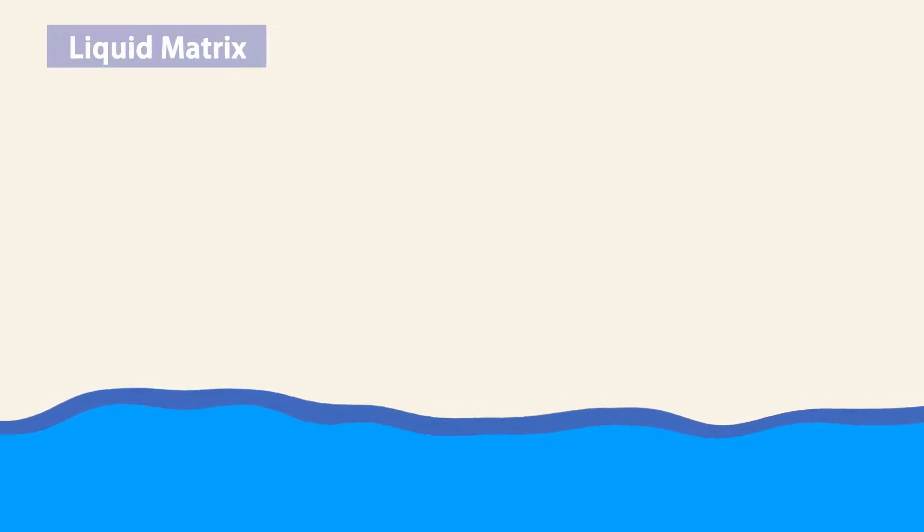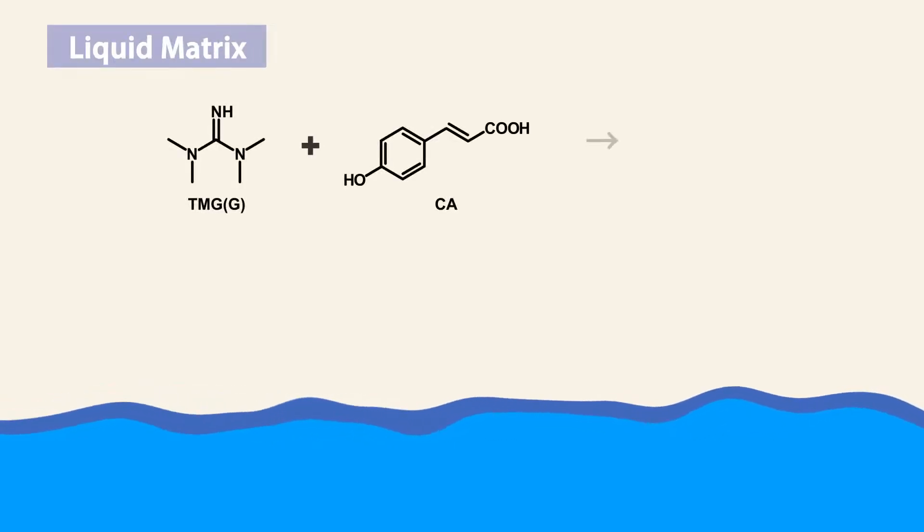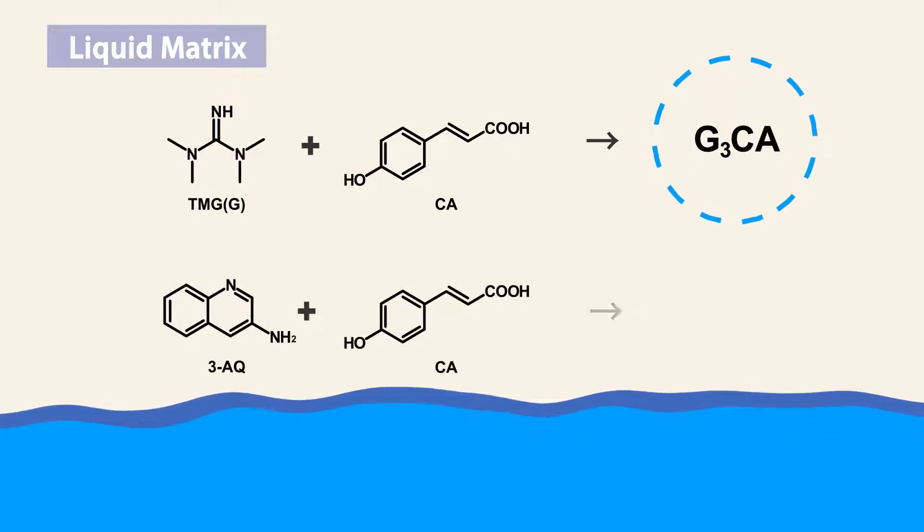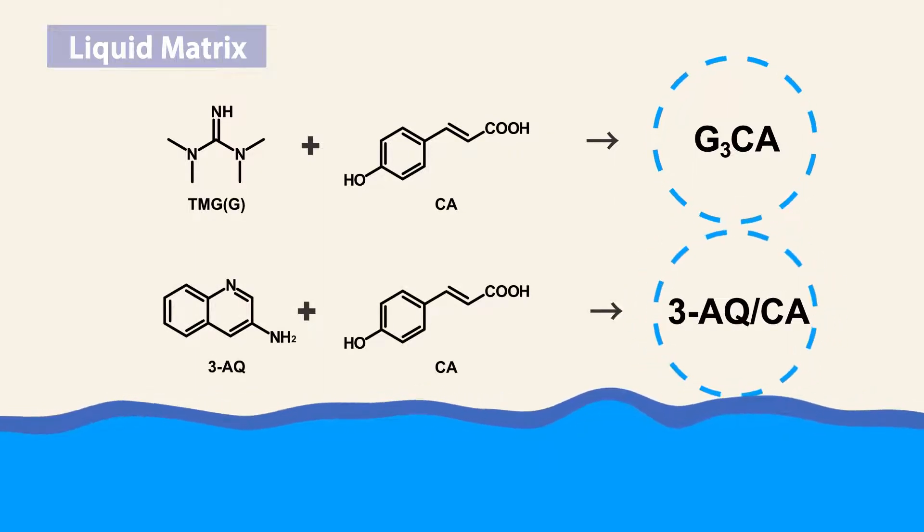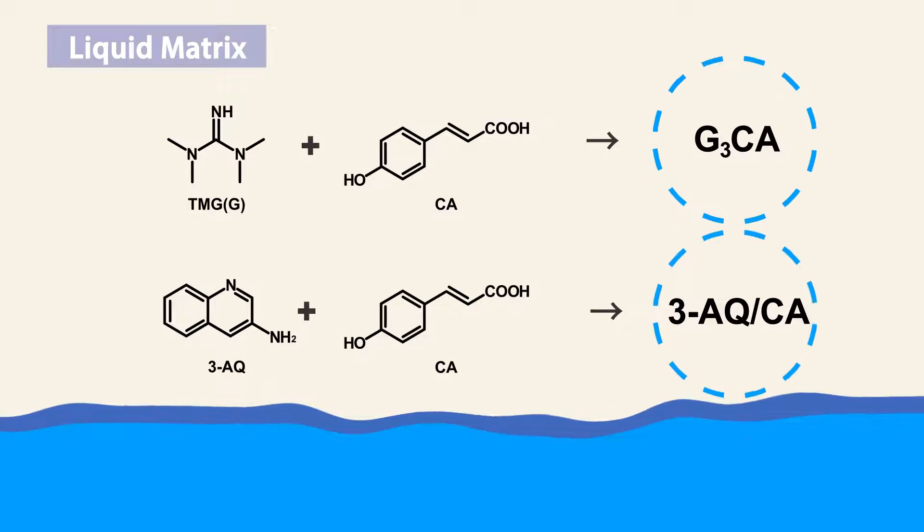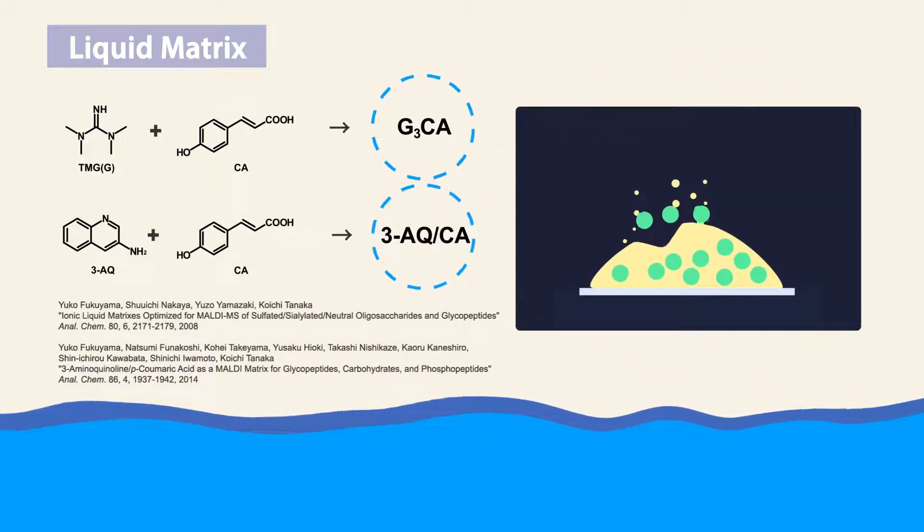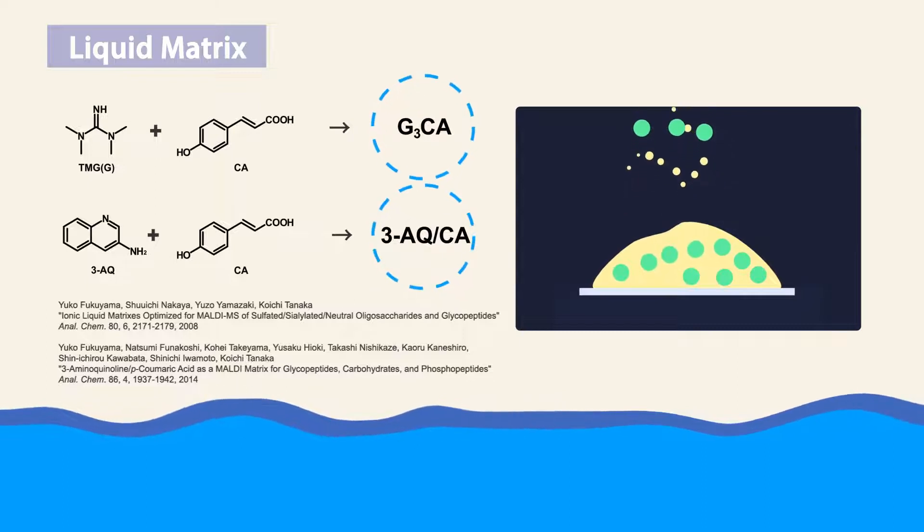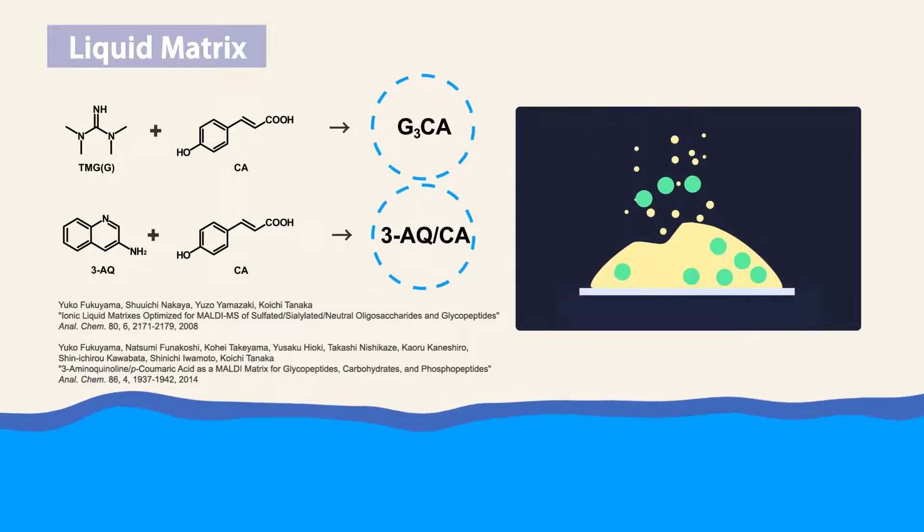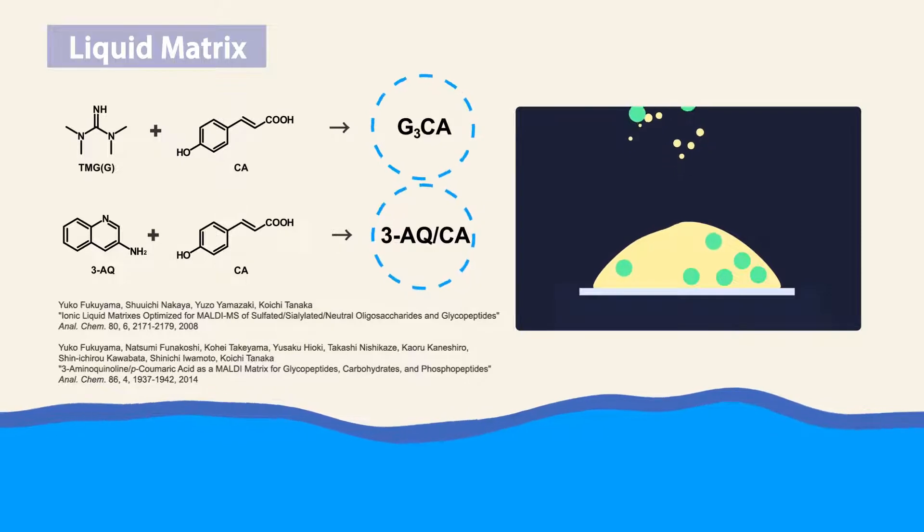Liquid matrix: Several liquid matrices have been developed for relatively soft ionization and sensitive detection of carbohydrates, glycopeptides and phosphopeptides. Liquid matrices are more fluid than solid ones and, in some liquid matrices, ions can be produced relatively continuously upon laser irradiation.